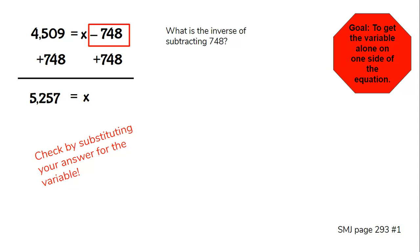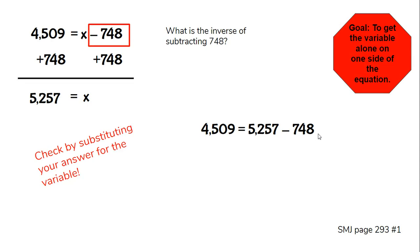You always, always, always have to check your work by substituting your answer for the variable — wherever x is, put in 5,257 and solve. So: 4,509 = 5,257 − 748. When we check, they're equal. That tells us we're correct — x equals 5,257.